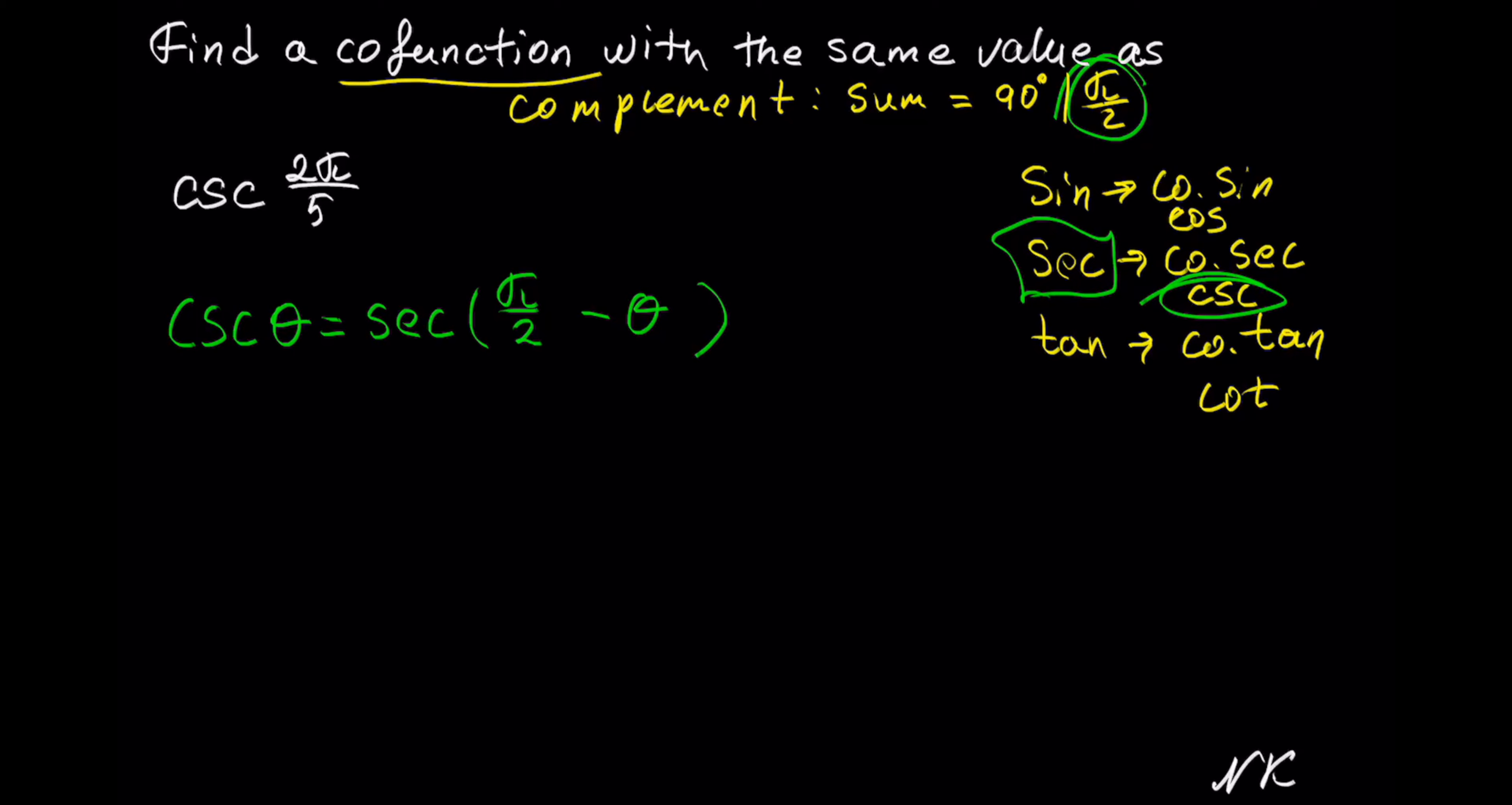So let's substitute the angle in. We have cosecant of 2π out of 5 is equal to secant of π out of 2 minus 2π out of 5.